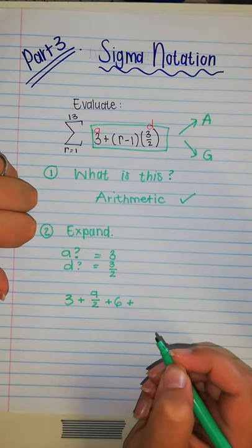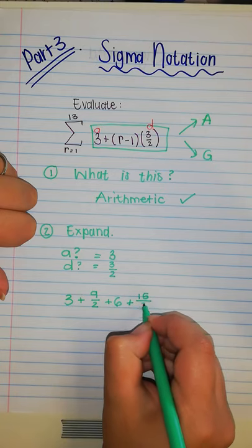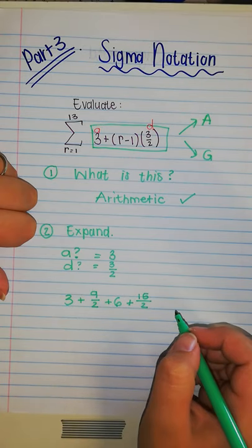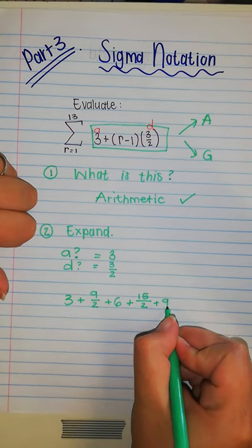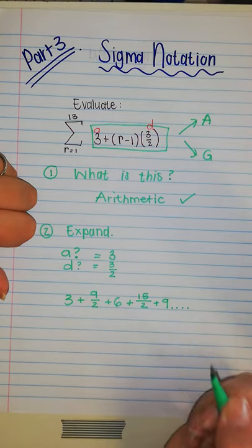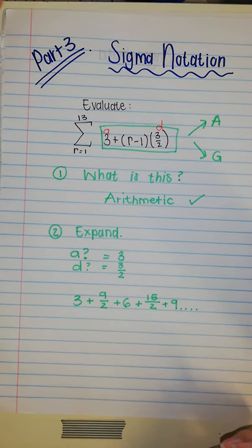Okay, and then six plus three over two is going to give me 15 over two. And 15 over two plus three over two is going to give me nine. And I'm going to continue with this one. Okay. Now, the very important question of this is, can I determine my last term? Which in this case is yes.